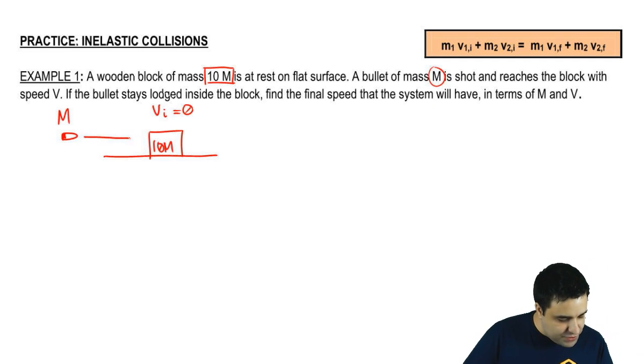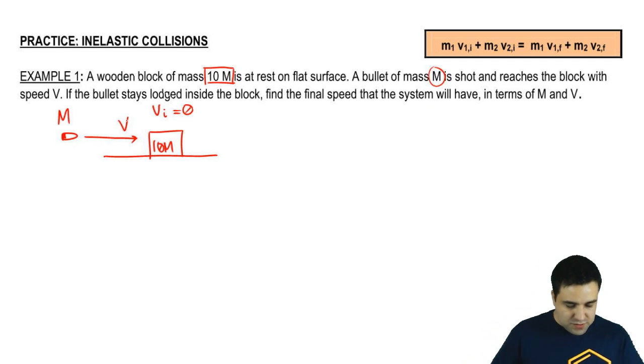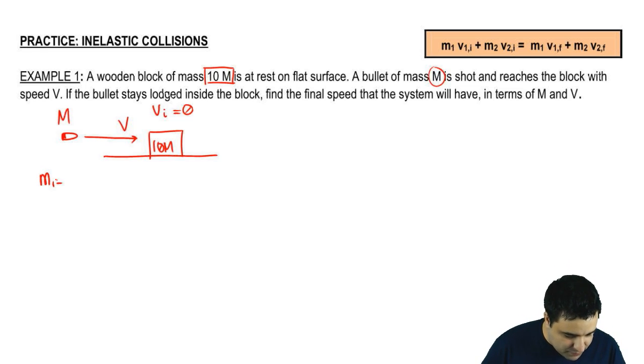It's shot and reaches the block with speed v. So I'm going to say that the mass of the first object is big M and the initial velocity of the first object is big V.